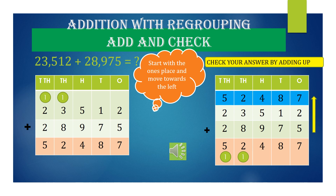Here you are going to learn about Add and Check. You are going to add 23,512 with 28,975. You follow the same procedure of adding, starting with the ones place and moving towards the left. We find the answer is 52,487. With this answer you are going to check your answer by placing the numbers and adding from bottom to top — the answer will be the same.